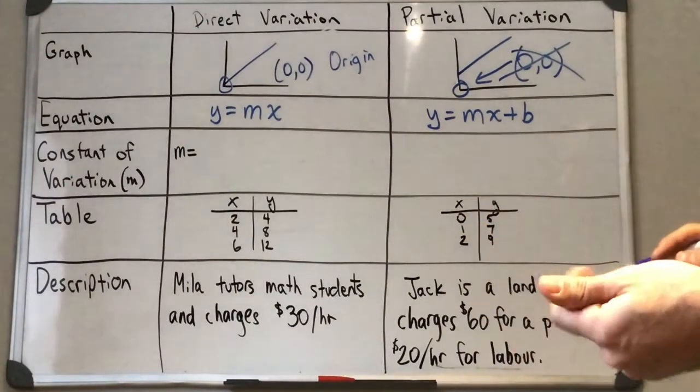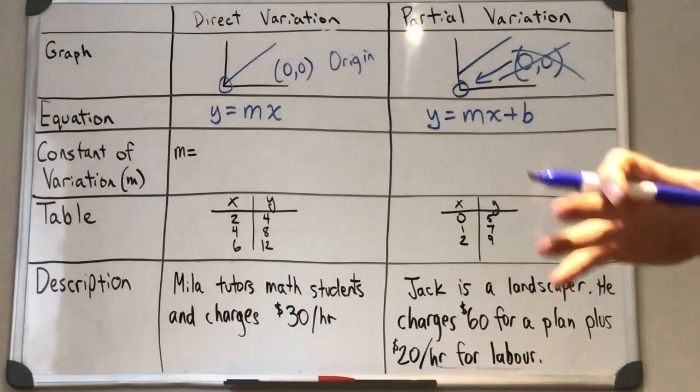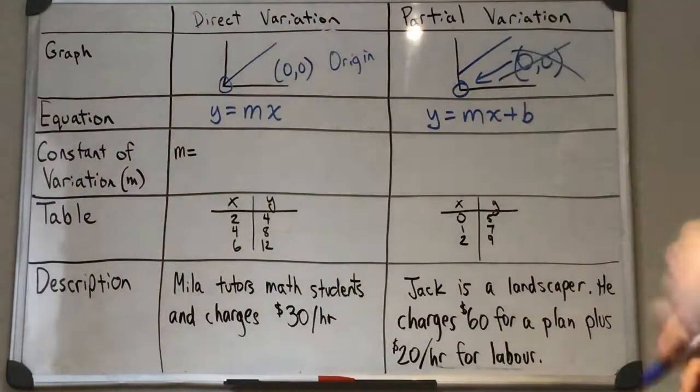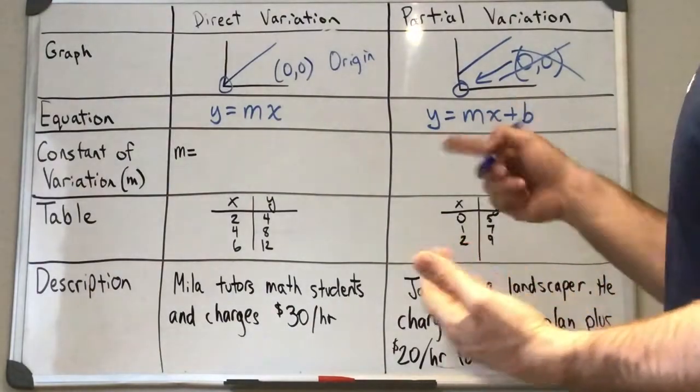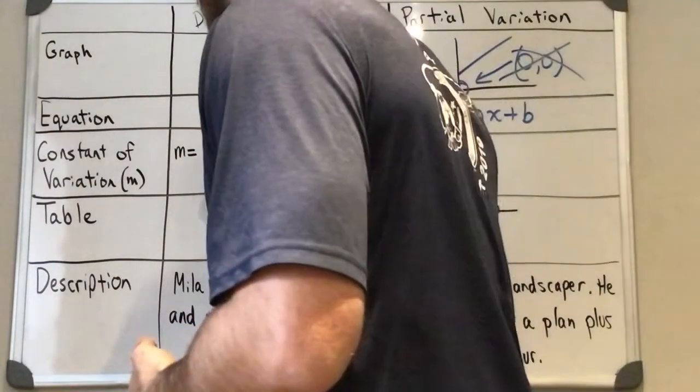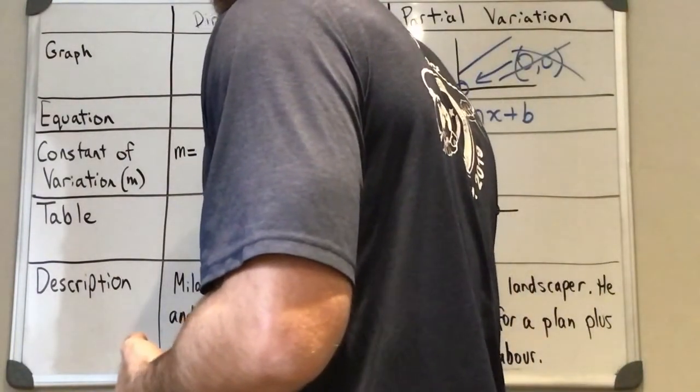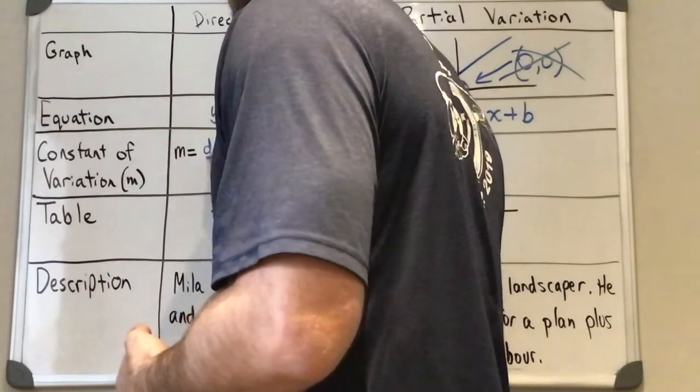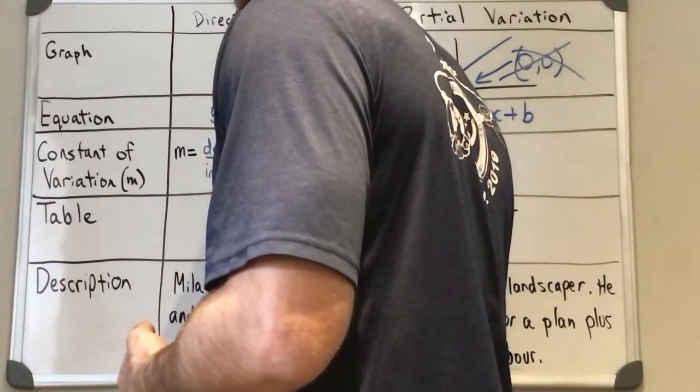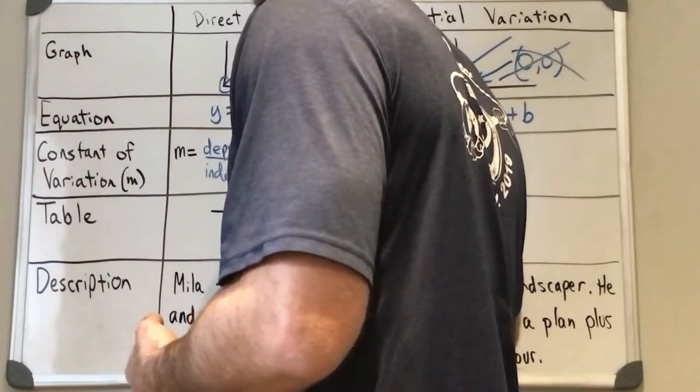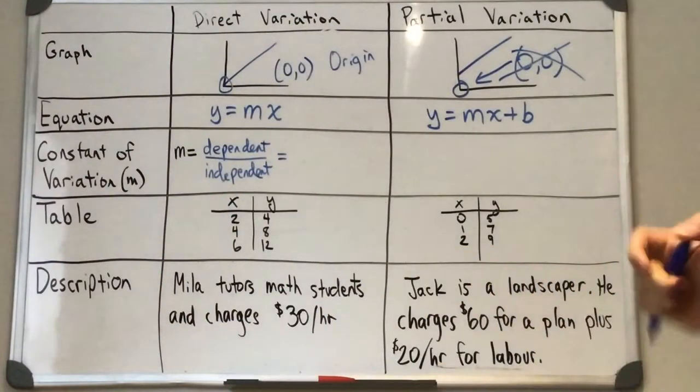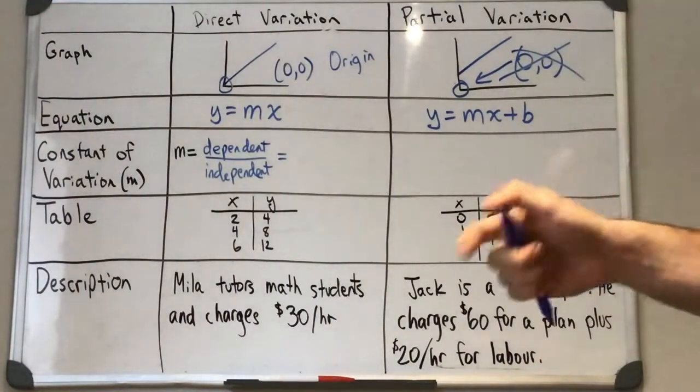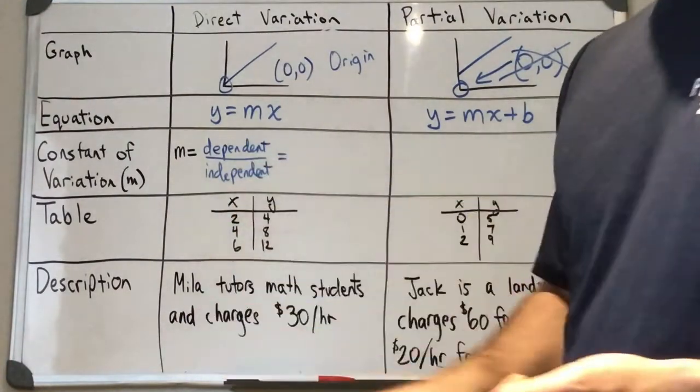So the constant of variation is kind of like the rate at which the line is increasing or decreasing. So to find that with a direct variation problem, we divide the dependent variable by our independent variable. So in most cases, this is our y divided by our x.